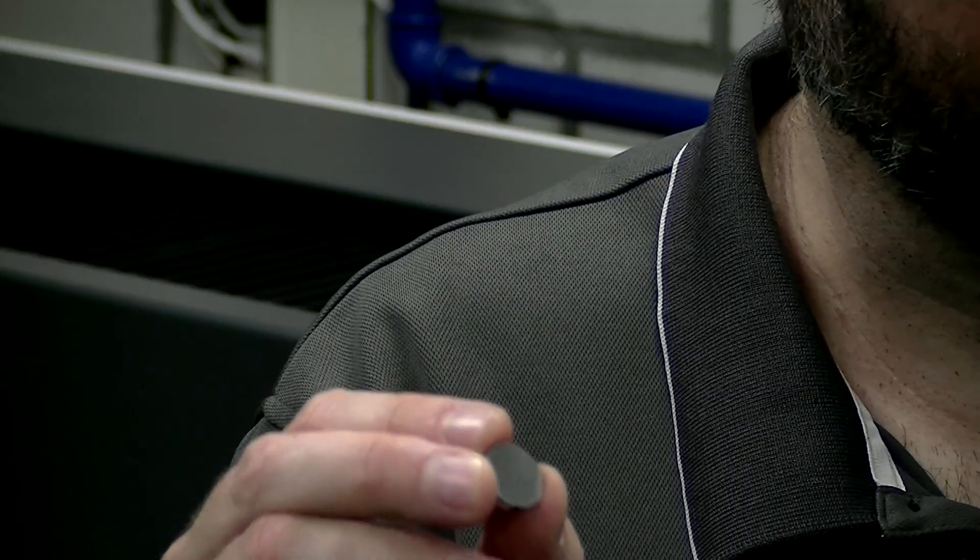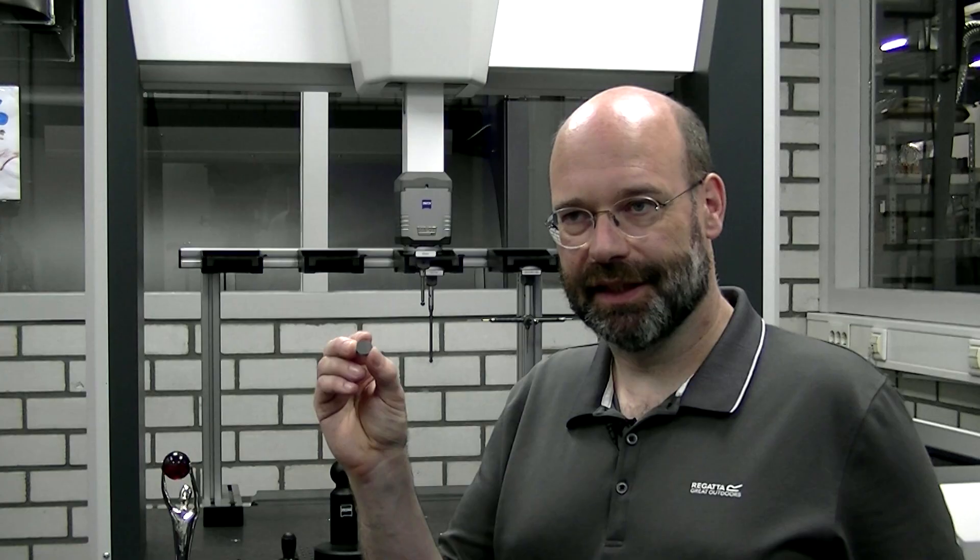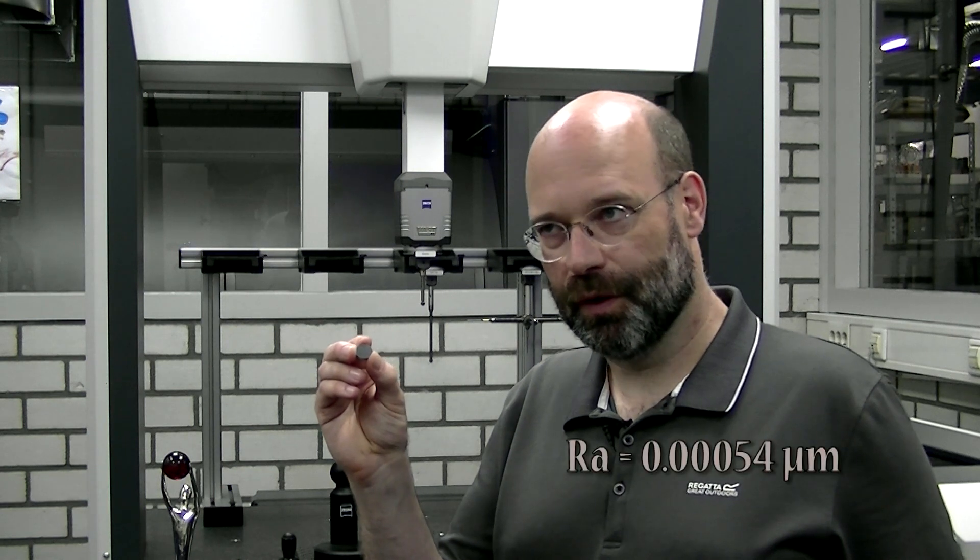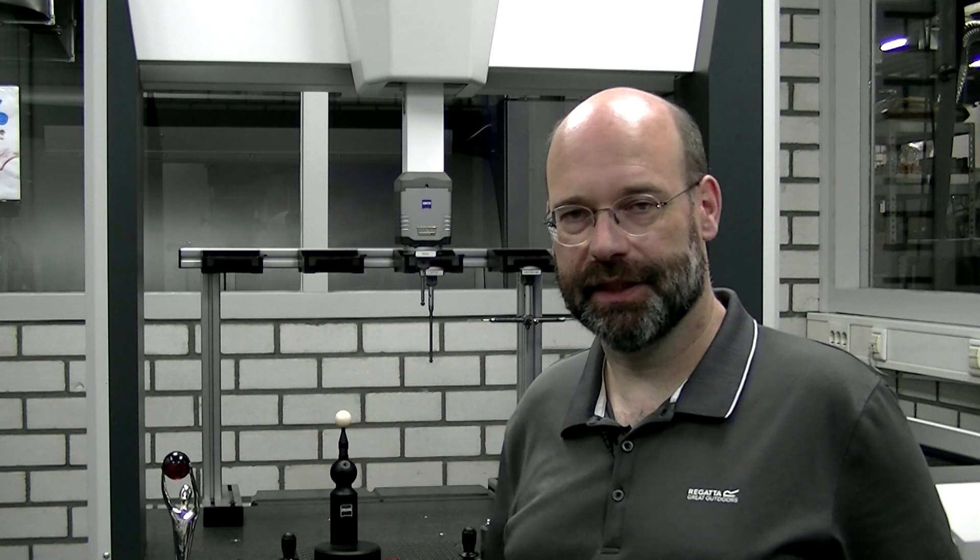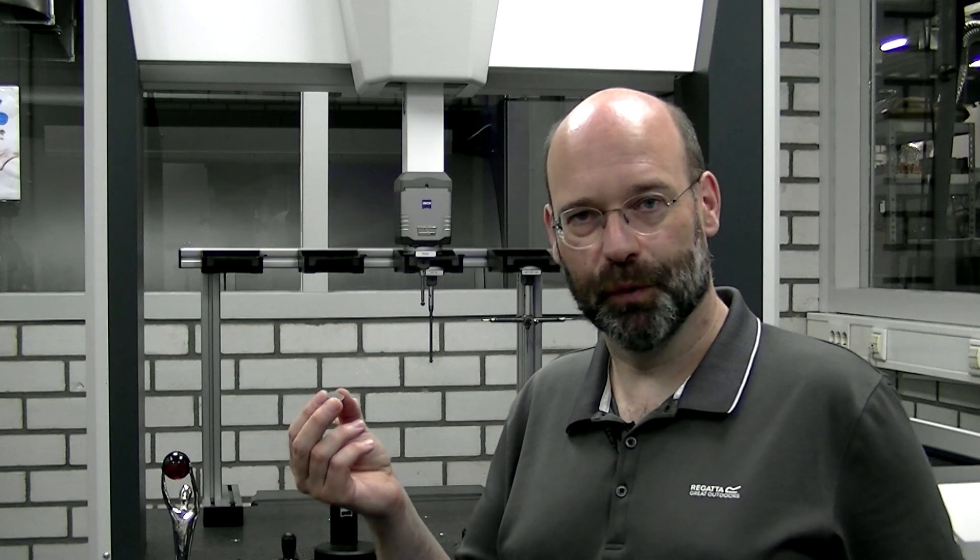I have polished this little disc to an Ra of 0.54 nanometers, that is 0.00054 microns, and in micro-inch that is 0.02. The material is ordinary tool steel hardened to 52 Rockwell C.